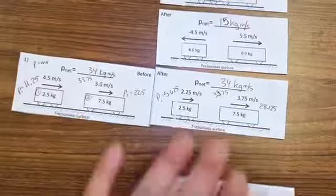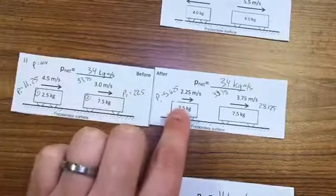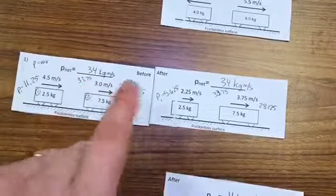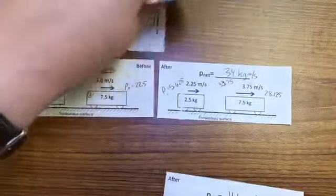So we have a scenario where we have these two cars colliding. This one rear ends that one. They bounce off each other. This one's now going faster and this one's going slower. They both have the same net momentum. That is a before and after crash pair.